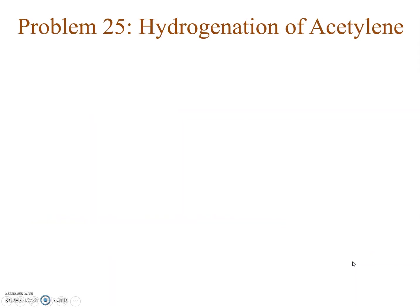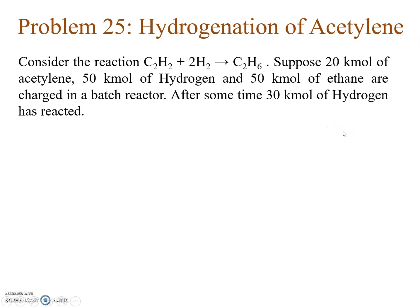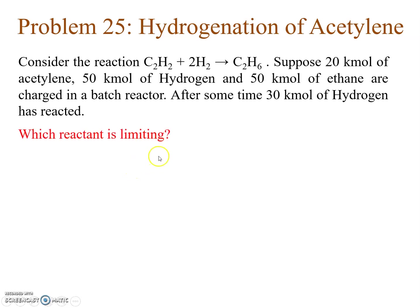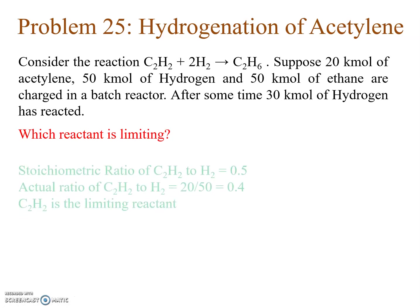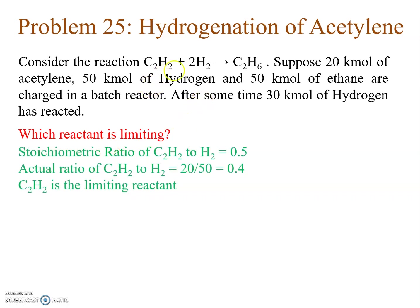Based on the concepts developed in the last video, I am going to take a problem which deals with the hydrogenation of acetylene. Suppose we are charging a batch reactor with 20 kilo moles of acetylene, 50 kilo moles of hydrogen, and 50 kilo moles of ethane. After some point of time, 30 kilo moles of hydrogen has reacted. Which reactant is limiting? The reactant is limiting if it is present in an amount less than its stoichiometric proportion.